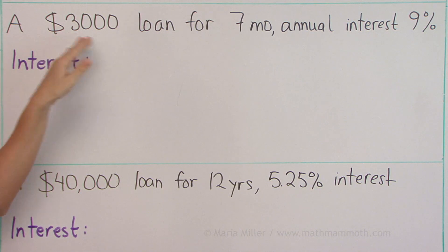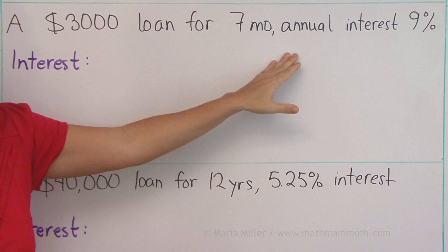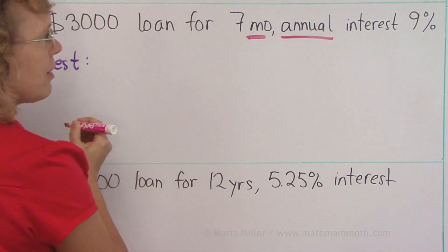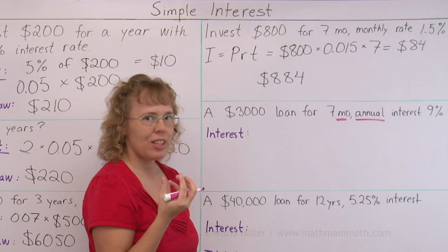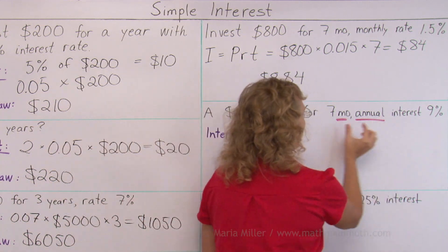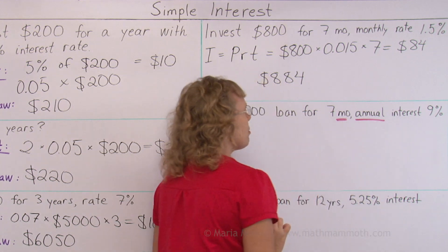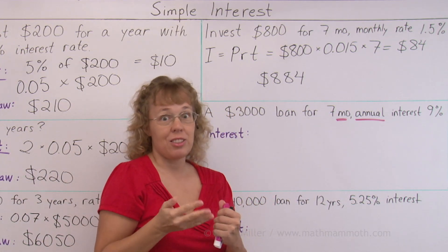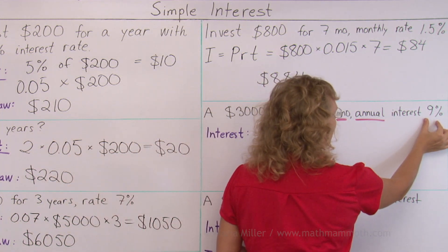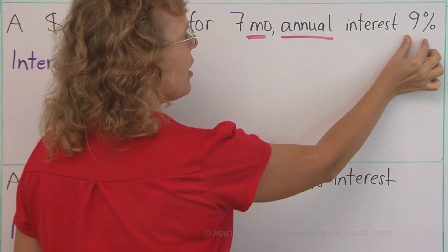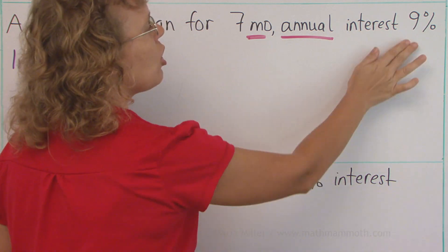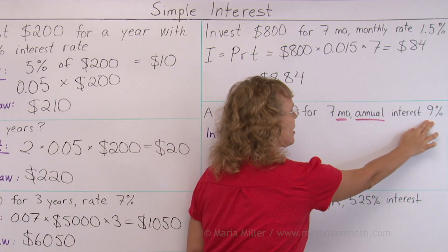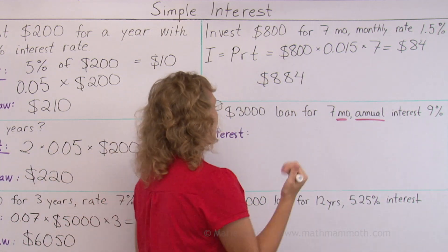Over here, there's a $3,000 loan for seven months, and the annual interest is 9%. Notice something important: it says seven months, yet the interest is given as annual interest, which means yearly interest. In this case, we cannot simply multiply these three numbers, because the time units don't match. What we need to do is either change this time to years — seven months expressed as a fraction of a year — or change the interest rate to a monthly rate. Either way, a division by 12 is involved.